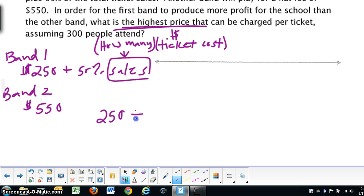$250 plus .5 of the sales. And I'm going to leave that in parentheses for just a minute. They want that to be more than the other school, or the other band. So it would be greater than $550. Okay, so like I said, sales would be how many tickets, and they tell us at the end here that it's 300 times the amount, the ticket cost, which is what we have to find. So that's going to be our unknown, is our ticket cost.